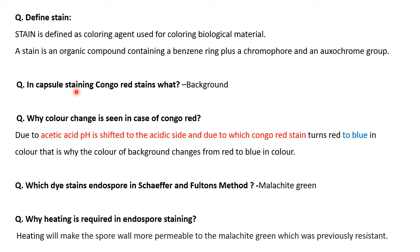Now we are starting with the staining methods for capsule, flagella, endospore, and cell wall. First is capsule staining. In capsule staining, we use Congo red, which stains the background. A related question is: why is a color change seen in case of Congo red? In the Maneval stain, there is acetic acid present. Due to its presence, the pH is shifted to the acidic side, causing Congo red to turn from red to blue, which is why the background appears blue.